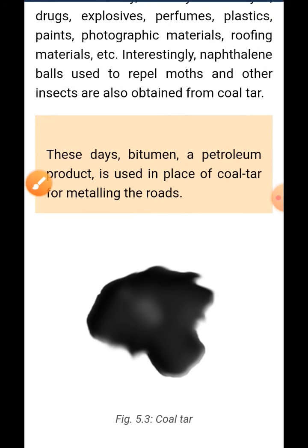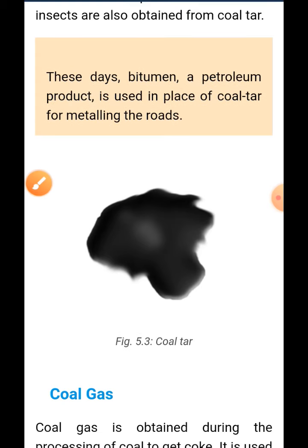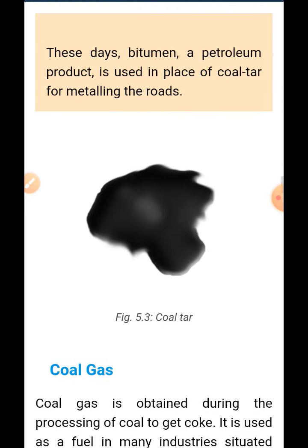An interesting fact: these days, bitumen — a petroleum product — is used in place of coal tar for metalling the roads. Earlier, coal tar was used on roads, but now bitumen is used instead.